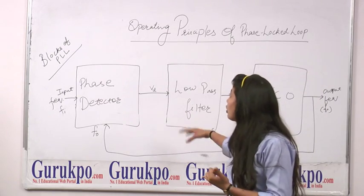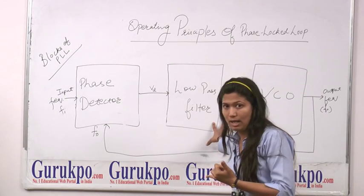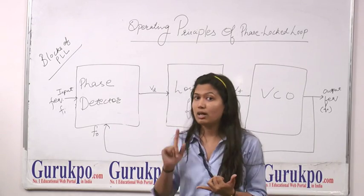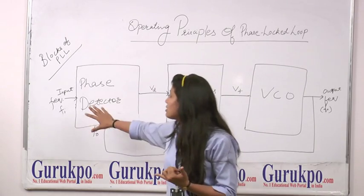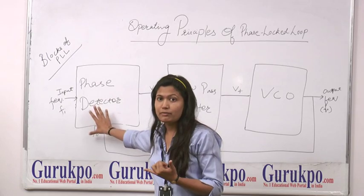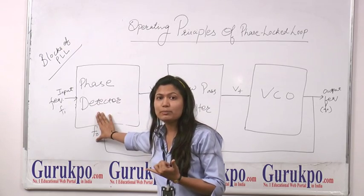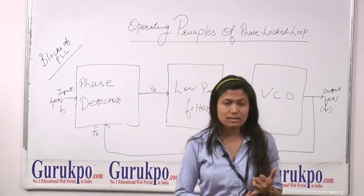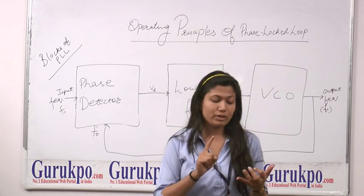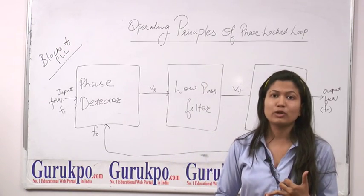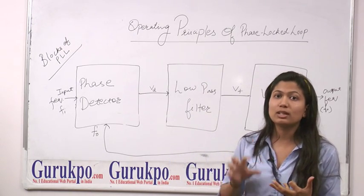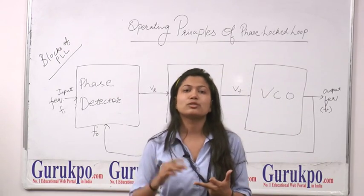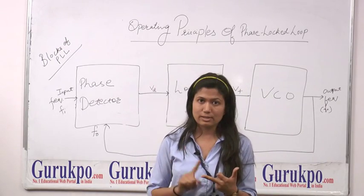This is all about the working of a PLL. When no AC signal is applied — that is, when there is no input signal — the Phase Detector output is zero. At this time, the VCO works at its free running frequency, also called its center frequency.